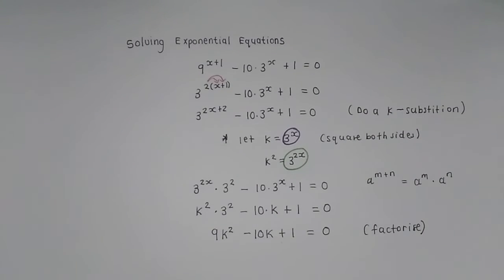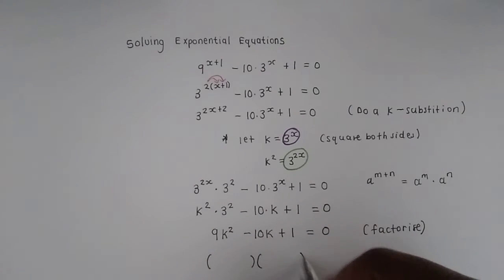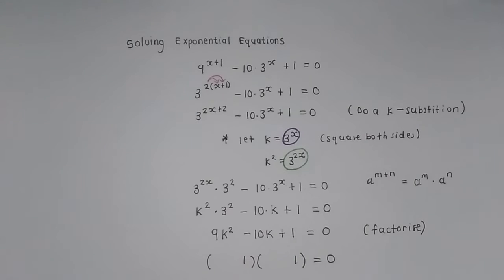Now factorization is sort of another component that you need to practice if you are not that good at it. Something that helps a lot is to check this last term of your quadratic. If it is a prime number or something like 1. Notice 1 is not a prime number. I'm not saying that 1 is a prime number. If it is a prime number or something like 1, it is quite easy to factorize because the only way you can multiply to get to 1 is to use 1 and 1. So we're going to open two brackets.